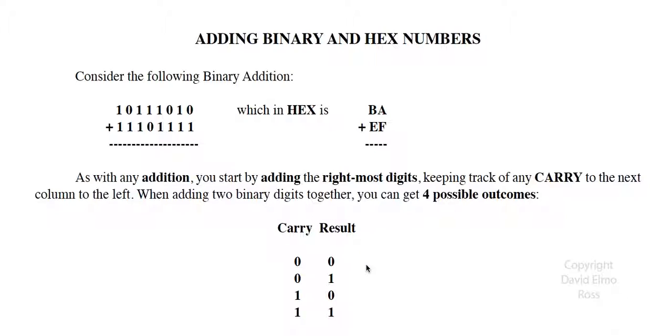We can have a value of zero when we do that addition, which means we had a result of zero with no carry. We can get a result of one, which is one plus no carry. We can get a result of two, which is a carry plus a zero result. Or we can get a result of three, where we have a result of one plus a carry to the next column.